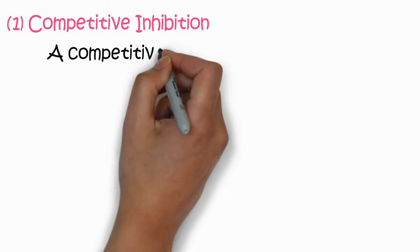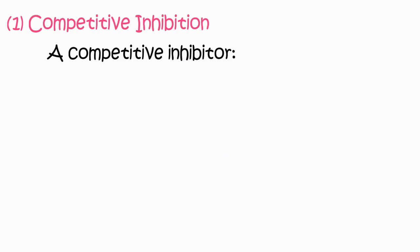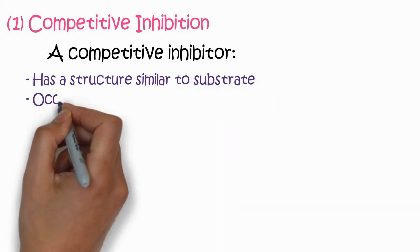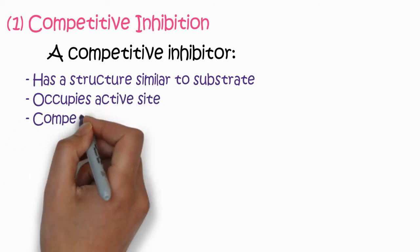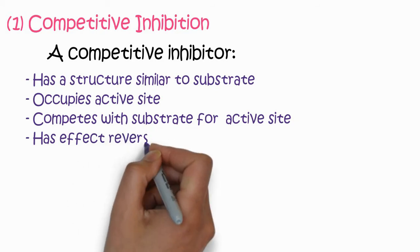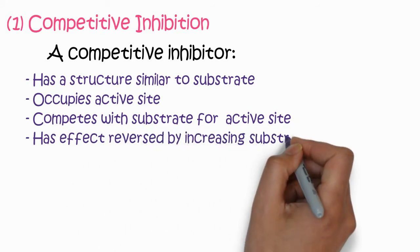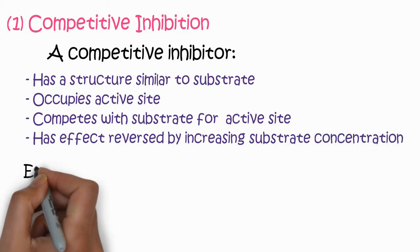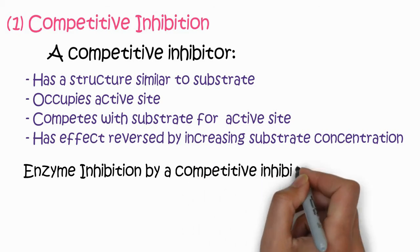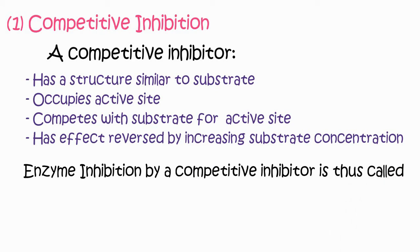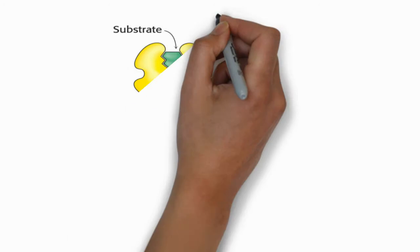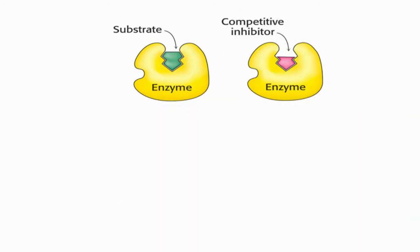The first class is competitive inhibition, which is a type of reversible inhibition. A competitive inhibitor has a structure similar to the substrate, it occupies the active site, it competes with the substrate for the active site, and its effect is reversible by increasing substrate concentration up to a certain limit.